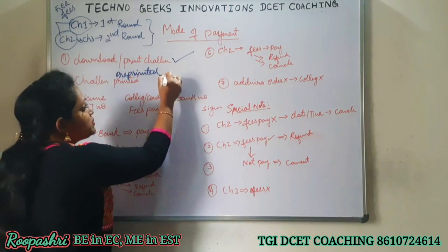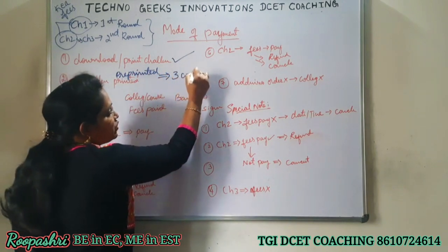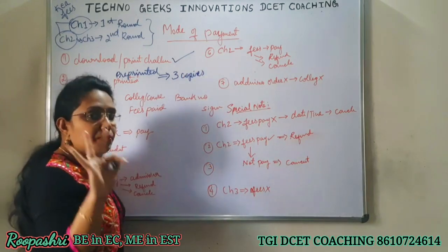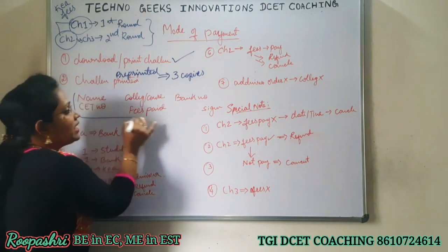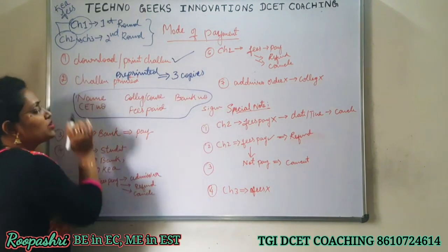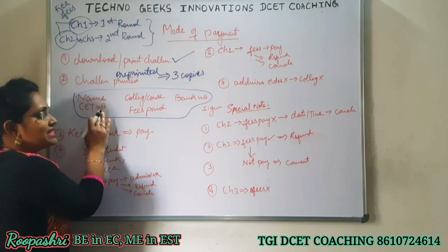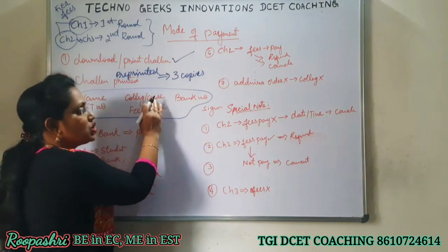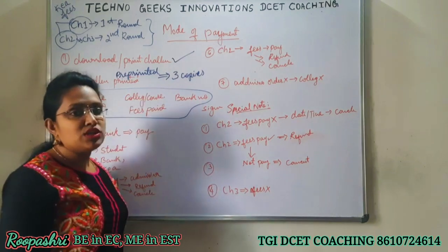You don't need to write anything - everything will be printed. Yes, 3 copies will come - triplets. Triplets means 3 copies will come, so take 3 copies print. Check all the information in these 3 copies - your name, DC2 register number, which college has been allotted, which course you have been joined in. Check all this thoroughly, students.